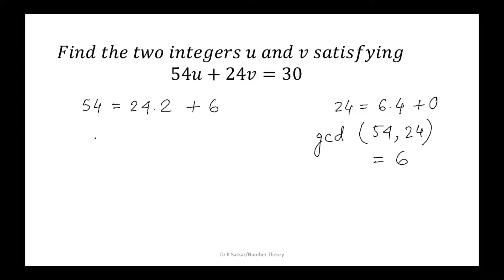From here, we can write 6 as 54 minus 24 times 2, which is 54 plus 24 times negative 2. Let us multiply by 5 both sides.